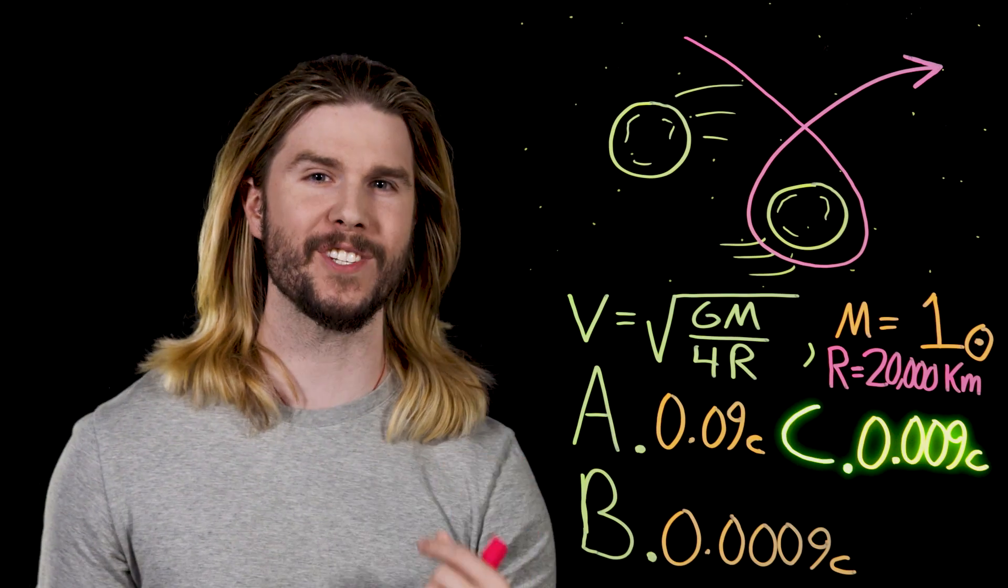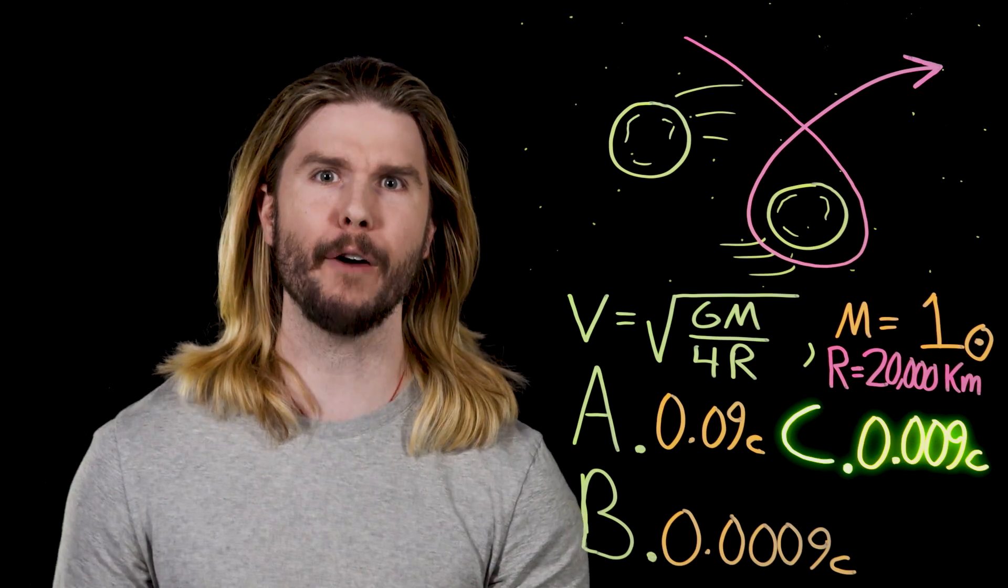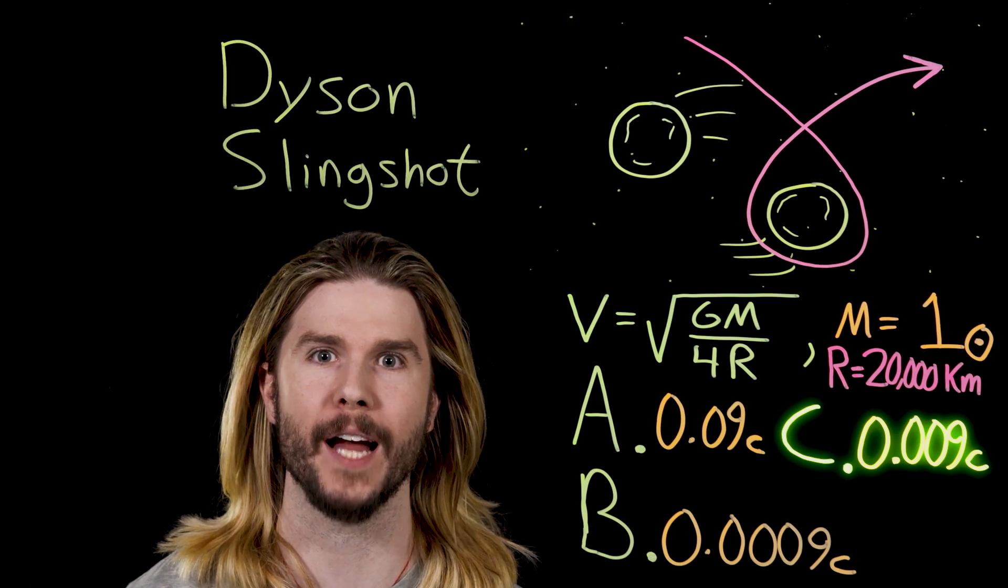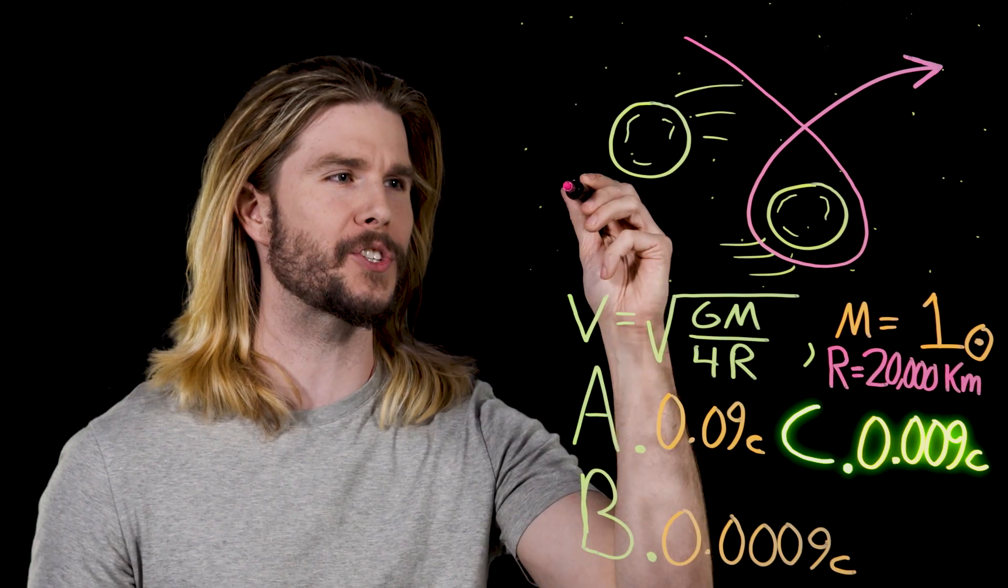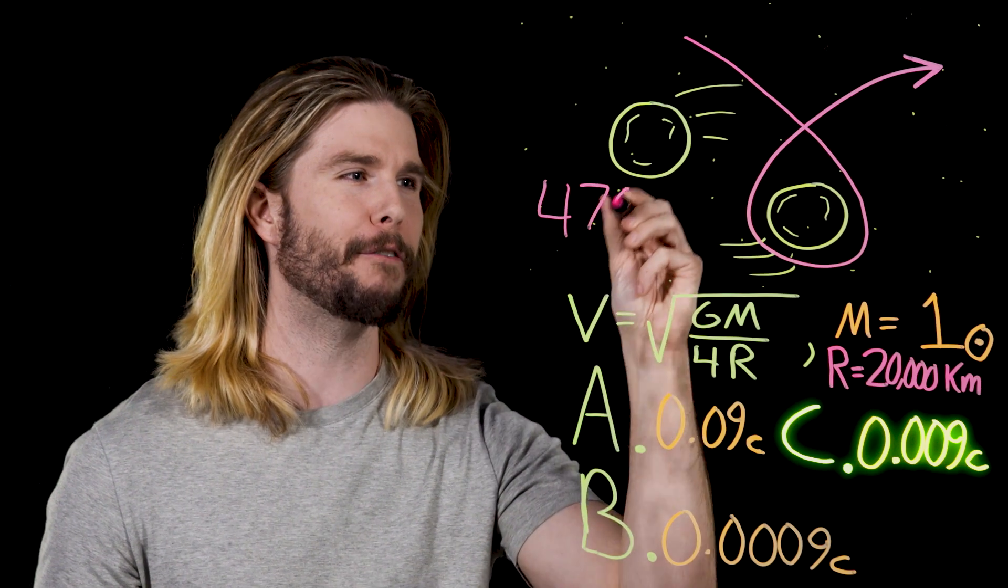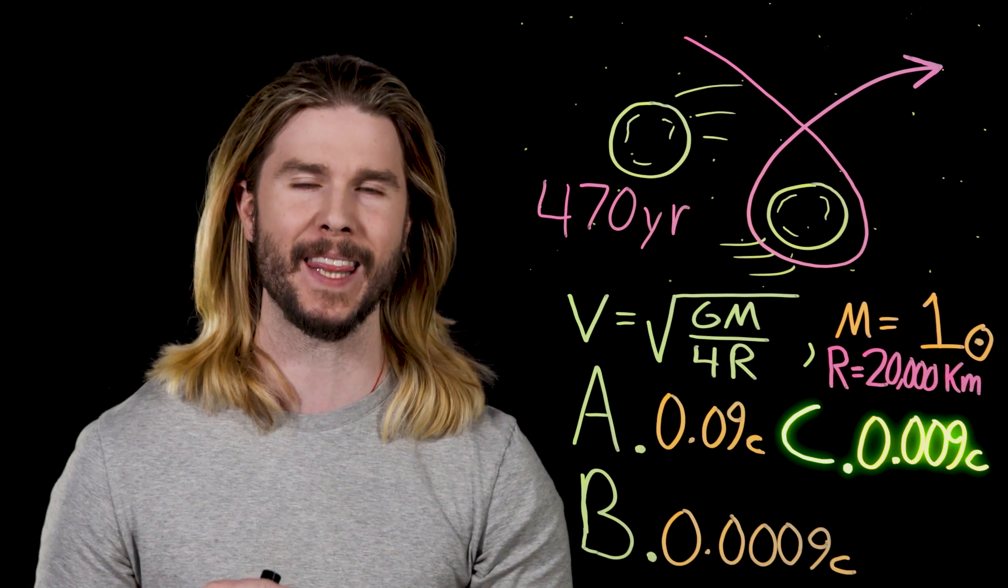The correct answer is C, almost 1% the speed of light. This is the true power of a Dyson Slingshot, a gravitational machine that could get us to the nearest star in under 500 years instead of 79,000.